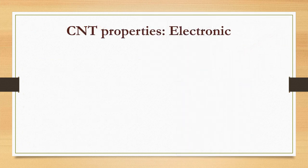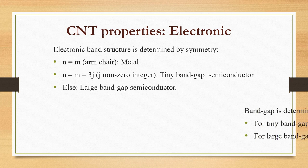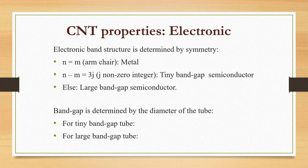Electronic properties of carbon nanotubes: The electronic band structure is determined by symmetry. When N equals M, we have armchair structure displaying metallic properties. When N minus M equals 3J, they behave as tiny bandgap semiconductors, otherwise as large bandgap semiconductors. The bandgap is determined by the diameter of the tube.